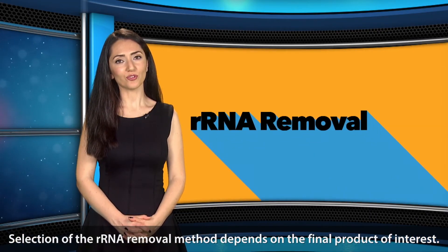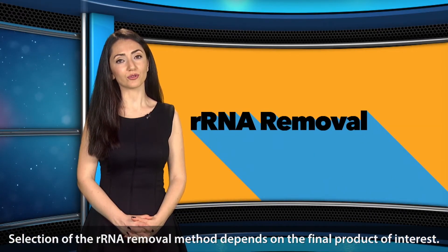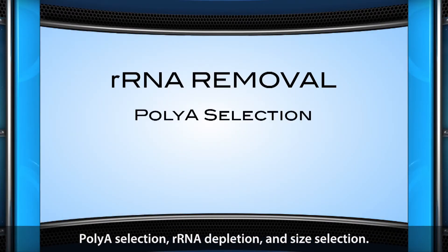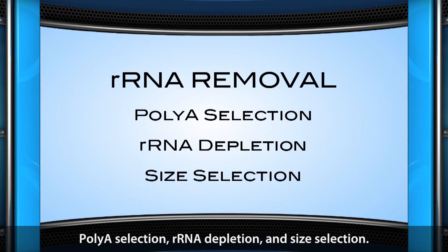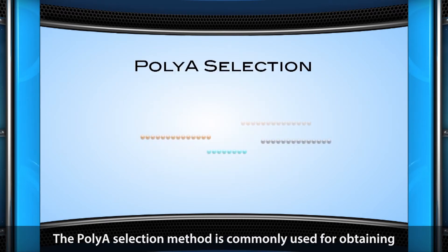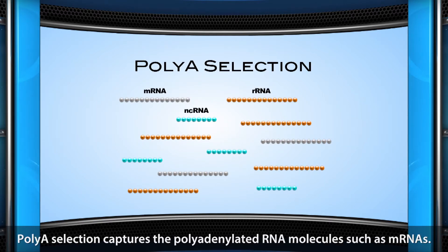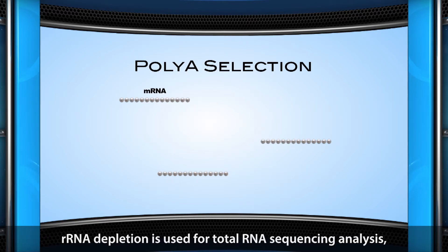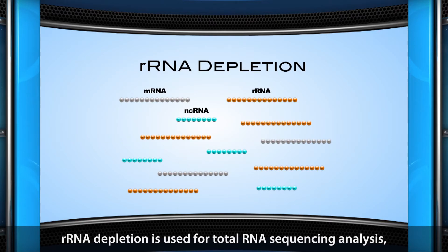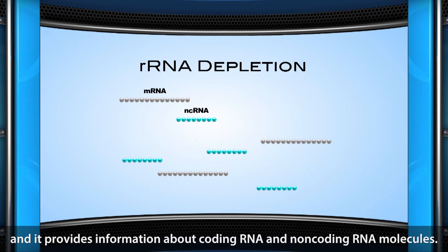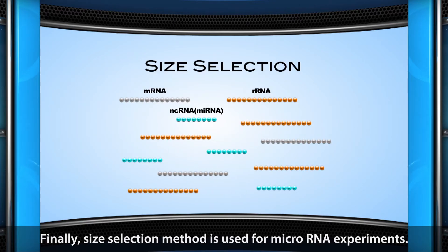Selection of the rRNA removal method depends on the final product of interest. Most commonly used rRNA removal methods are polyA selection, rRNA depletion, and size selection. The polyA selection method is commonly used for obtaining only coding RNA molecules, capturing polyadenylated RNA molecules such as mRNAs. rRNA depletion is used for total RNA sequencing analysis and provides information about coding RNA and non-coding RNA molecules. Finally, size selection method is used for micro-RNA experiments.